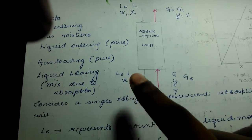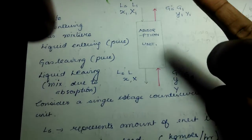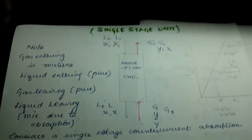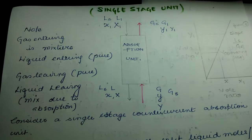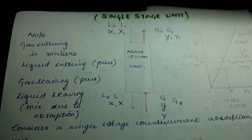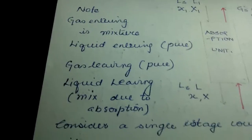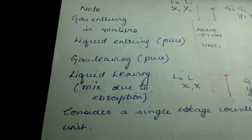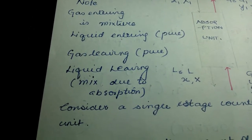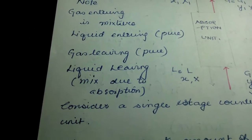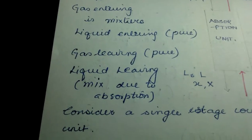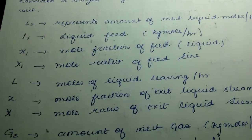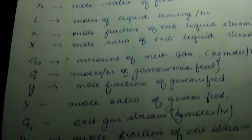We also have L, x, and capital X. Capital X is the mole ratio, x is the mole fraction, and L represents the amount of substance in kg moles per hour. The gas entering is a mixture and the liquid entering is pure. The gas leaving will be pure because of absorption, and the liquid leaving will be a mixture because it contains the ammonia.